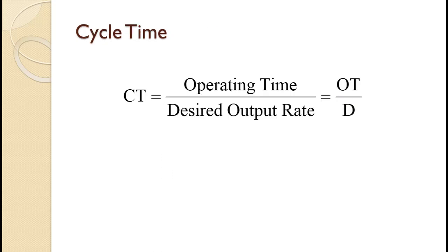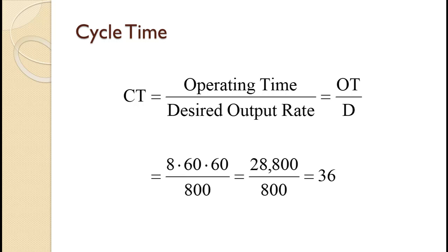Cycle time is calculated as the operating time per day divided by the desired output rate per day, as long as the time units are the same. The problem tells us they operate 8 hours a day, but the task times are in seconds, so we convert 8 hours a day into seconds by multiplying by 60 minutes per hour times 60 seconds per minute. Dividing by the desired rate of 800 per day gives us a desired cycle time of 36 seconds.